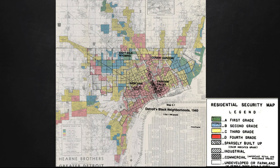Red was the color used to indicate this fourth area on the map, and thus a new term came into our vocabulary: redlining. Redlining is the practice of denying services — either directly or through selectively raising prices — to residents of certain areas based on the racial or ethnic composition of those areas. Households and businesses in the red zone cannot get mortgages or business loans. Redlining is still something that occurs today.